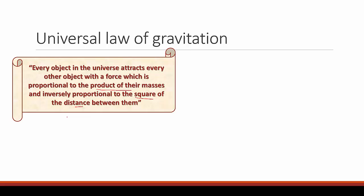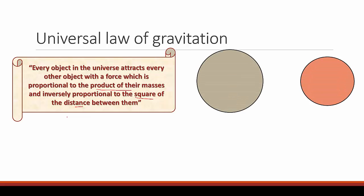Let us study this more clearly with an example. We have two objects — object A and object B — each with their specific masses. Suppose the mass of A is M and the mass of B is small m. They are separated by a distance D, and there is a force F attracting both of them.